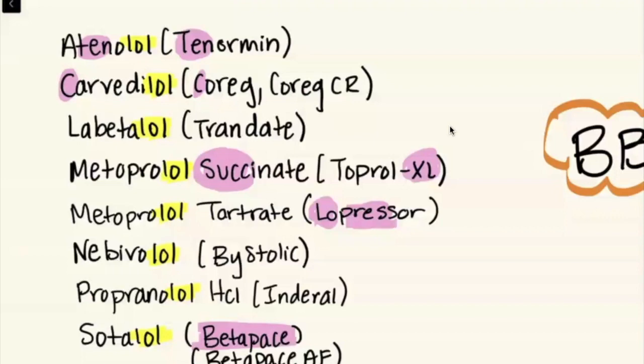Another method you could use if you're an auditory learner is you could simply say the generic brand names out loud, and you want to make sure you mix up how you say them. So you would start off with, for example, saying atenolol is Tenormin, carvedilol Coreg, labetalol Trandate, and then I'll switch. So you'll do brand to generic: Tenormin atenolol, Coreg carvedilol, Trandate labetalol.